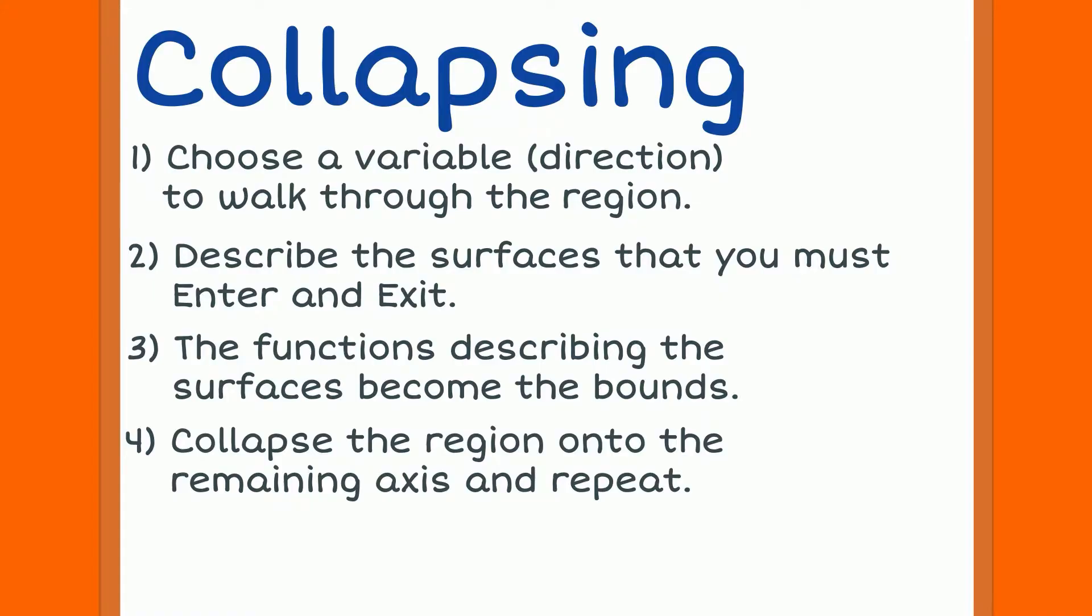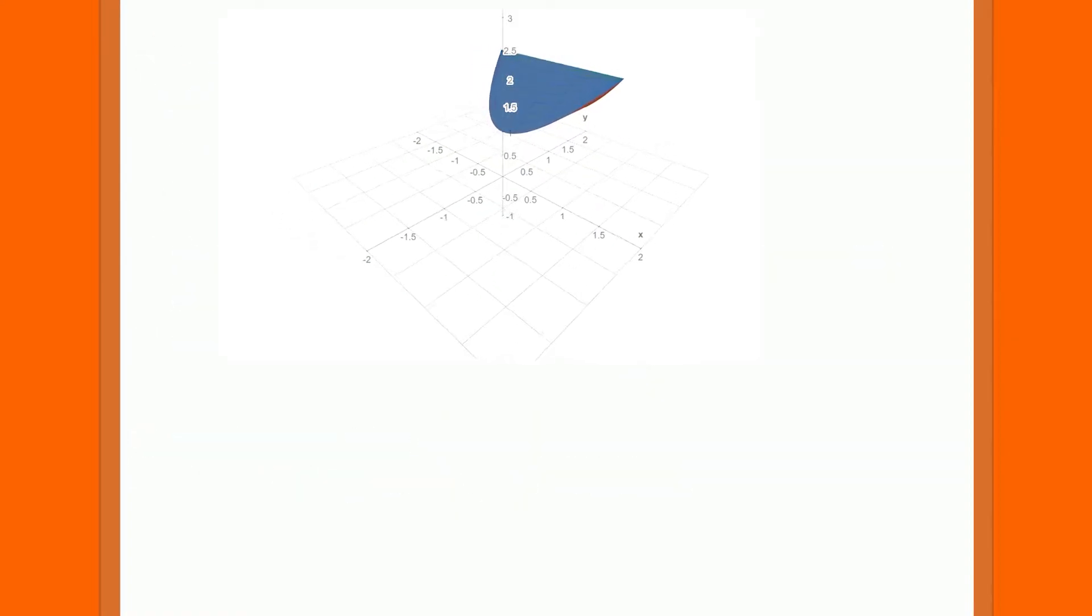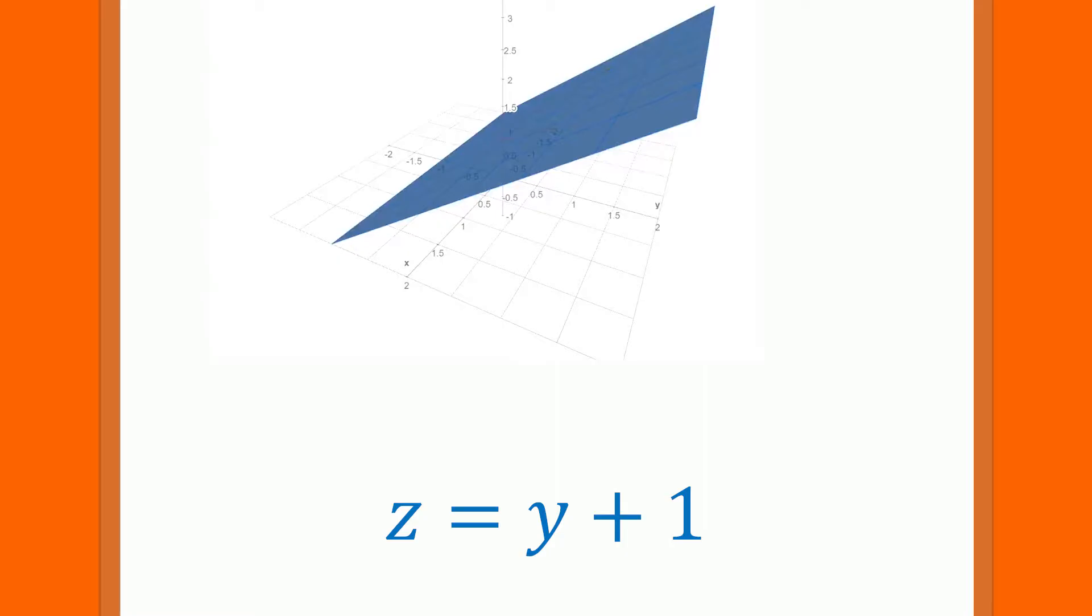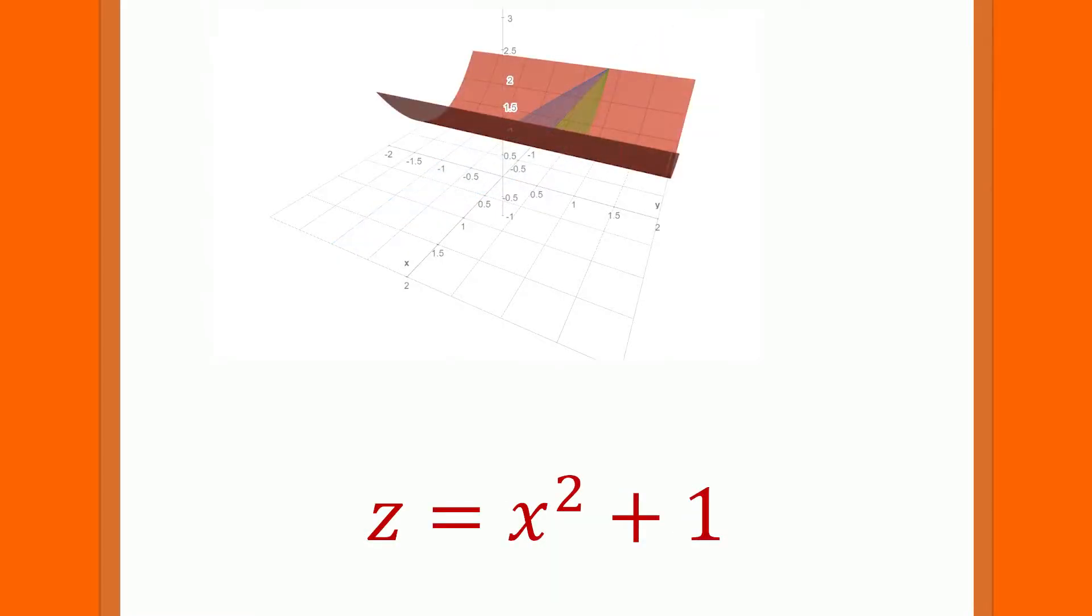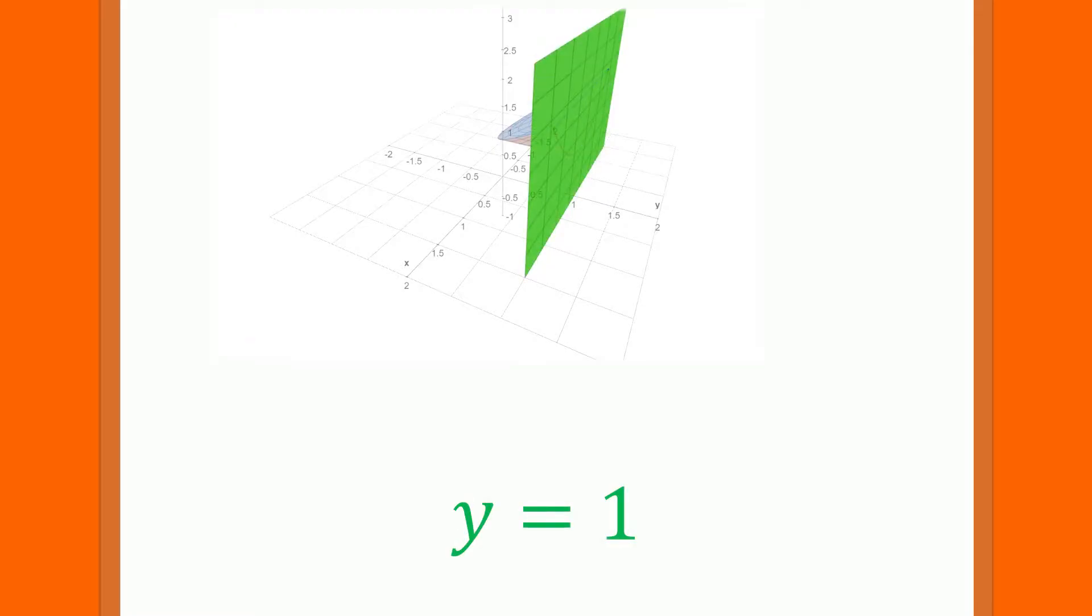Let's see how this works when our region is being described using rectangular coordinates. Here we have a region that is being bounded by three surfaces. The top is being described by the plane z equals y plus 1. The bottom is the parabolic cylinder z equals x squared plus 1, and the side is the plane y equals 1.